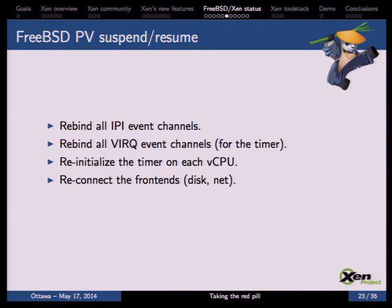To allow PVHVM guests to do suspend and resume for migration, on resume we need to re-bind all the IPI event channels, re-bind all VIRQ event channels used for PV timers, and re-initialize the timer on each vCPU. This is done automatically by the suspend and resume code. Finally we need to reconnect the frontends — the PV disk and PV NICs — as was done on FreeBSD 9.